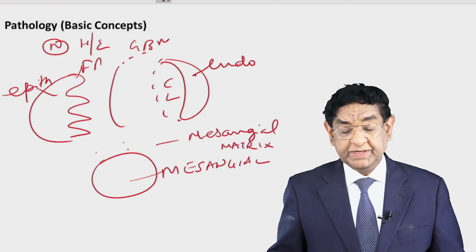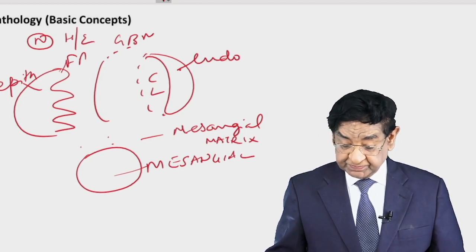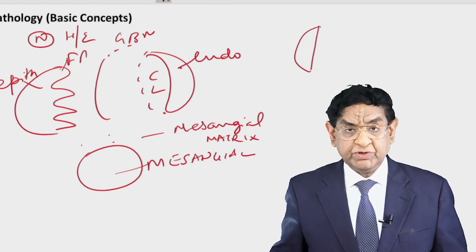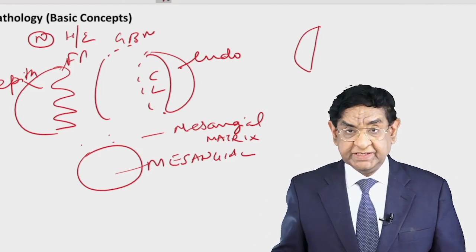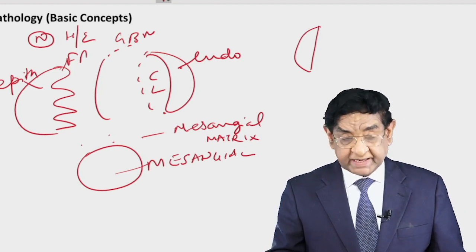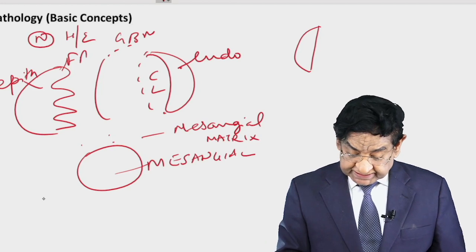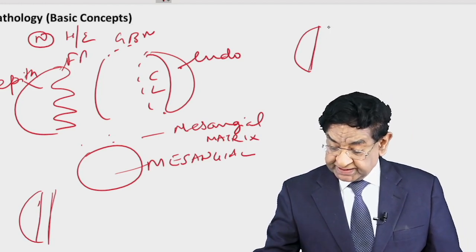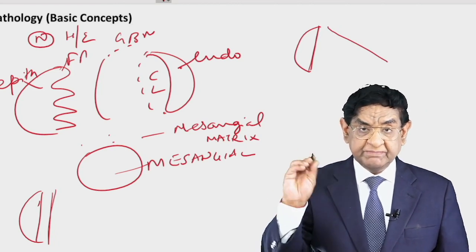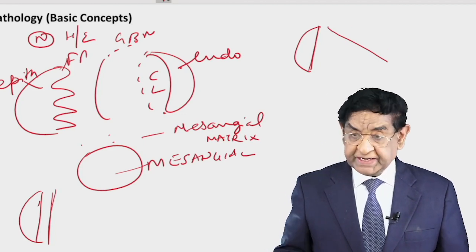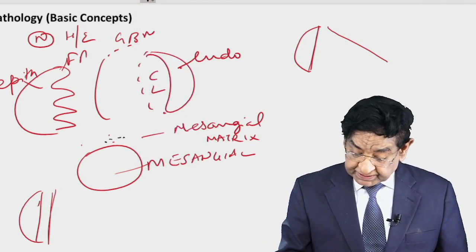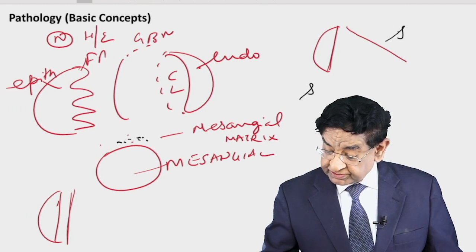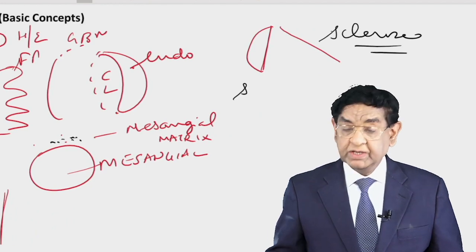In the pathology of FSGS, there is loss of foot processes — just like in minimal change disease. However, unlike minimal change, in FSGS the foot processes get detached from the basement membrane. Also, IgM antibody deposition does occur in FSGS, mainly in the mesangium, especially in the sclerosed glomeruli.